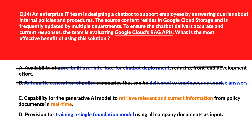Let's move to option C. C says capability for the generative AI model to retrieve relevant and current information from policy documents in real-time. Real-time retrieval ensures the chatbot accesses the latest and most relevant data — let's keep it. We'll move to D. This is provision for training a single foundation model using all company documents as input. Model training improves generalization but doesn't guarantee up-to-date responses — we'll delete this. Lock option C as the right answer.